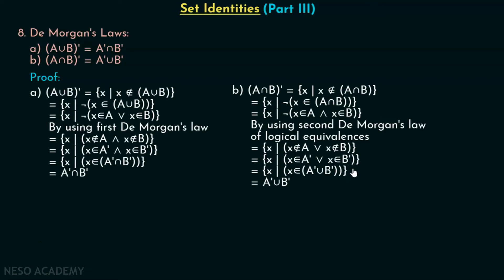From this, we can easily write A complement union B complement. Therefore, A intersection B complement is equal to A complement union B complement.